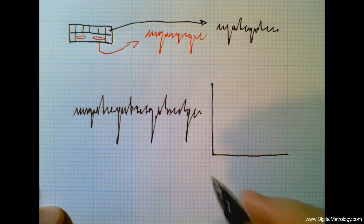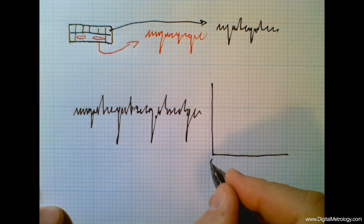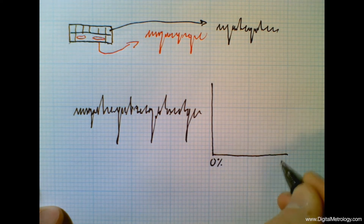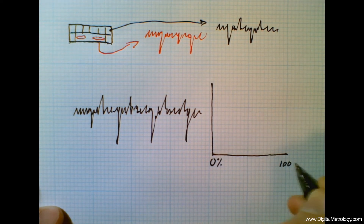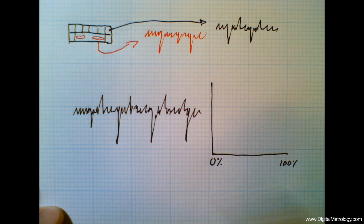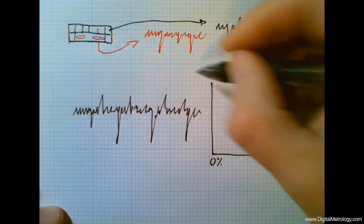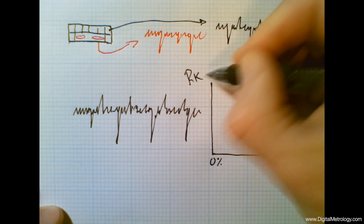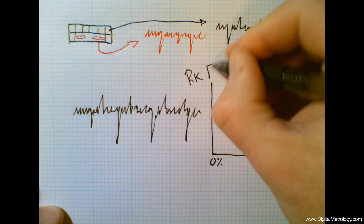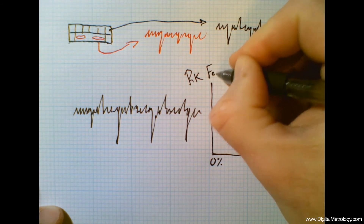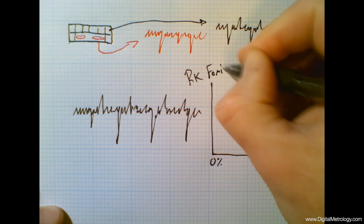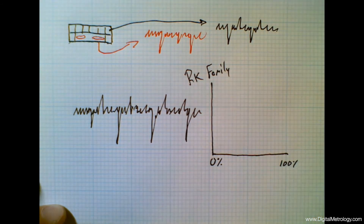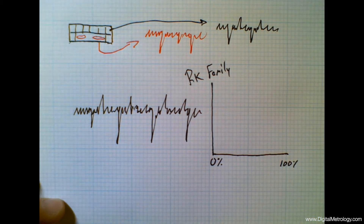A single number can't describe that, so we're going to look to a family of numbers — particularly the RK family of parameters. Not a single number, but a few numbers to describe the discrete characteristics.